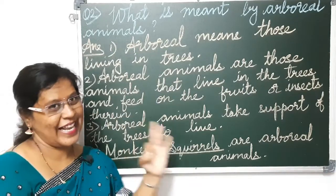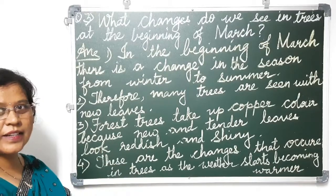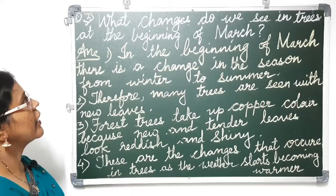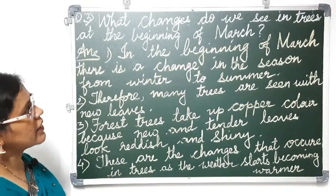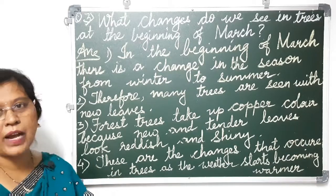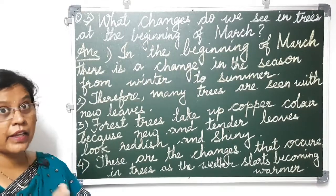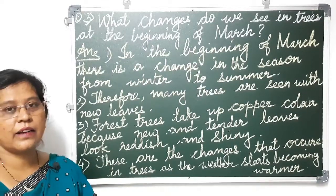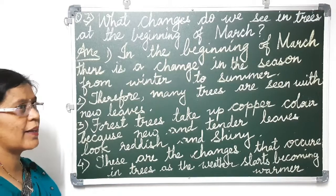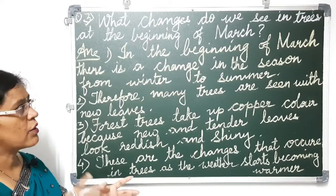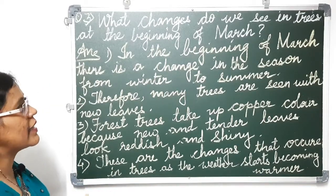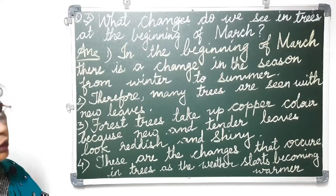Now this is the last question of this exercise, lesson number two. The third question says: what changes do we see in trees at the beginning of March? March is a serious month for students because in March and April there are oral exams and final exams — a very important and crucial month. It is also the beginning of the summer season.